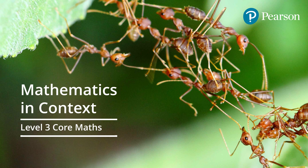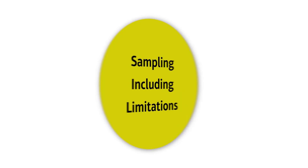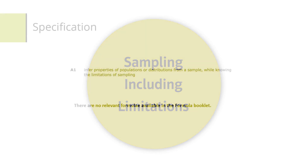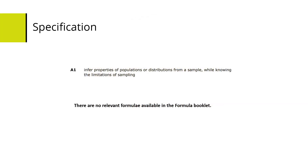Hello and welcome to this Level 3 Mathematics in Context training video for Pearson EdXL. In this video we're going to be looking at sampling including its limitations. Here's the specification reference — we need to infer properties of populations or distributions from a sample while knowing the limitations of sampling.